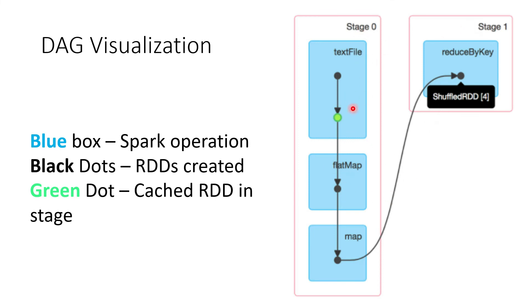Reading the DAG visualization: the number of blue boxes tells you how many operations there are; every operation creates a new RDD since RDD is immutable, so all black dots are separate RDDs, and all green dots are cached RDDs that can be utilized at a later stage.